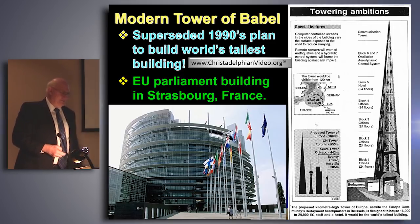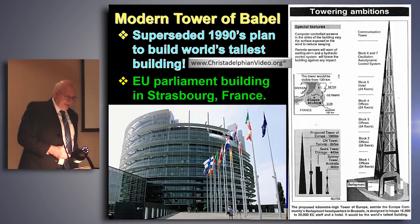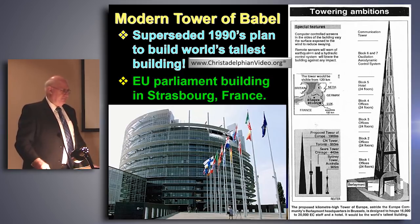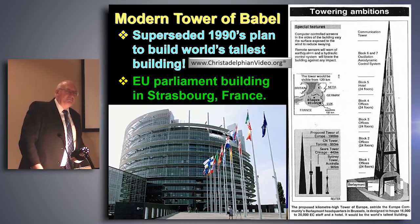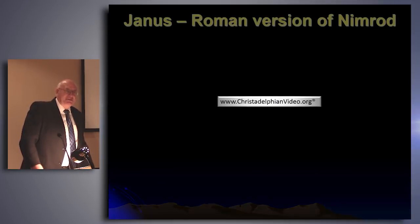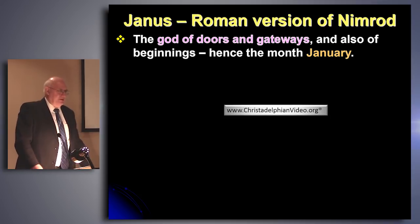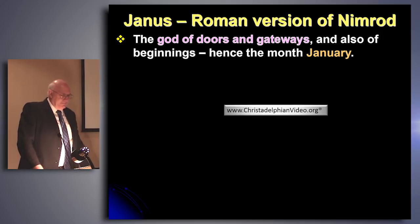This is the system that Christ and the saints are about to destroy. Do you remember I spoke of Bel or Cush ending up being called Baal and Janus? Janus was the god of doors and gateways, and also of beginnings — that's why we have a month at the beginning of our year called January. You ever heard of a janitor? That comes from Janus — the one who is at the door.